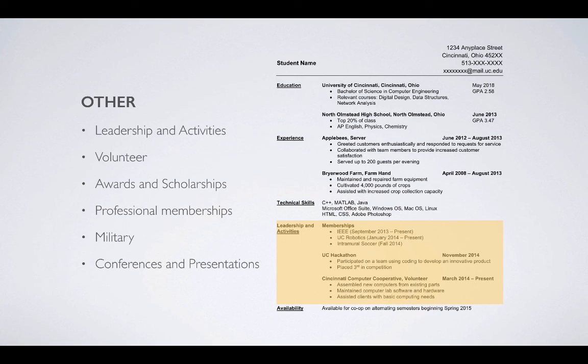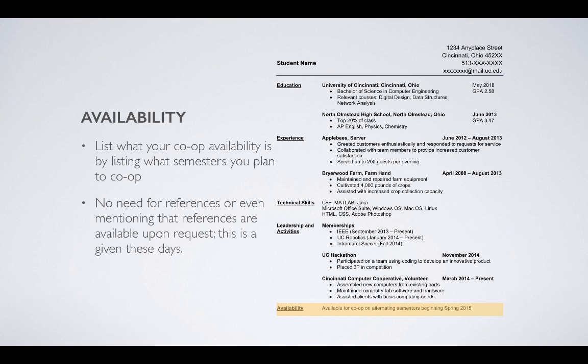You can have another section, and generally I recommend putting in any leadership and activities, any memberships you've been a part of, any activities you think are really relevant to the job search, any volunteer work you've done. Awards and scholarships can go in here, any professional memberships you might have. Military experience can go in this section, though some students will prefer their military experience to be under the experience section because military is a job. But if you want it down here, you can put it in this section, and any conferences and presentations that you have. Finally, you're going to want to put your availability. We don't do 'references available upon request' anymore. What we do is we list your co-op availability, and you want to list the semesters you plan to co-op. In this example, it says 'available for co-op on alternating semesters beginning spring 2015,' so the employer knows what semester you're interested in co-oping and that you're going to be doing it on alternating semesters.